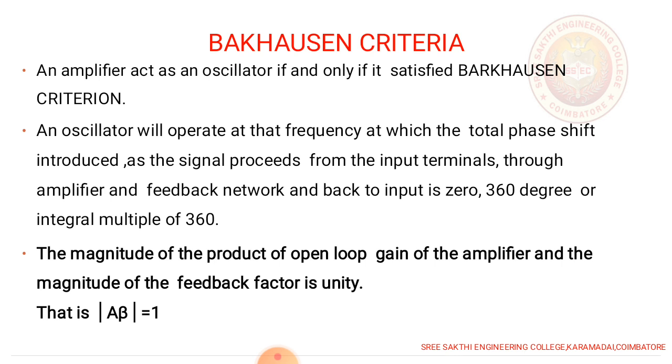An amplifier acts as an oscillator if and only if it satisfies the Barkhausen criterion. An oscillator will operate at that frequency at which the total phase shift introduced as the signal proceeds from the input signal through the amplifier and the feedback network and back to the network input is 0 or 360 degrees or integral multiples of 360 degrees. That is, the magnitude of the product of the open loop gain of the amplifier and the magnitude of the feedback factor is unity.